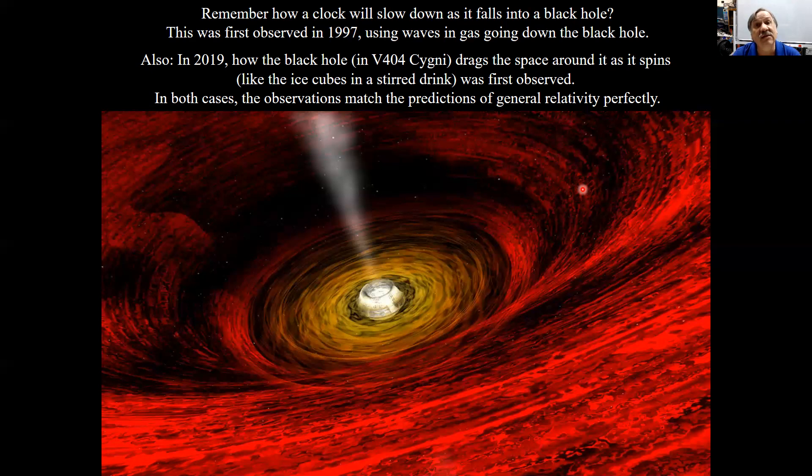That the black hole's gravity affects space and time, curves space and slows down time in exactly the way predicted by Einstein's general theory of relativity. It's striking. And so the observation of dropping the clock into a black hole and watching the second hand tick slower and slower, watching the clock tick slower and slower as it travels deeper and deeper into the black hole's gravity field, that's been done. And it follows the prediction, confirms the prediction of Einstein's general theory of relativity perfectly. Also in 2019, how the black hole in V-404 Cygni drags the space around it as it spins. When you stir a drink with ice cubes in it, the ice cubes get swirled around in the fluid in the drink just like the fluid does. This effect called frame dragging around a black hole, as a black hole spins, gravity will drag space and time around it. That's been observed. In both cases, observations match the prediction of general relativity perfectly. So if it looks like a duck, and it walks like a duck, and it swims like a duck, and it quacks like a duck, it's very likely to be a duck. So we are seeing black holes, one of Einstein's most surprising predictions. Let me stop there for this class.